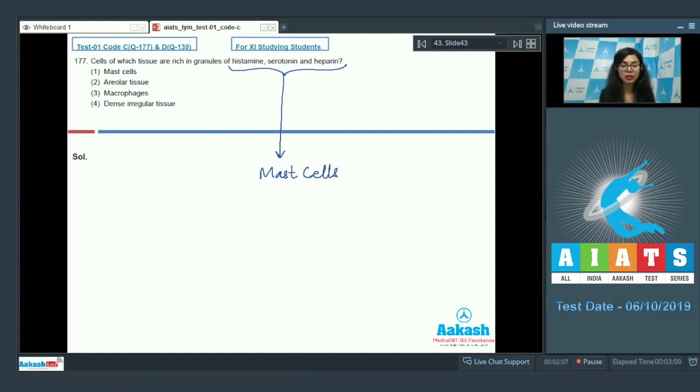And mast cells are found in areolar tissue, which is a loose connective tissue. So cells of which tissue is asked - that's why the correct answer would be areolar tissue, since mast cells are present in areolar tissue. The correct answer here would be option 2.